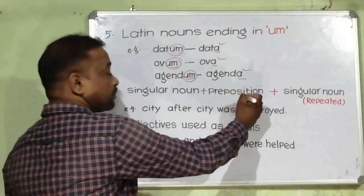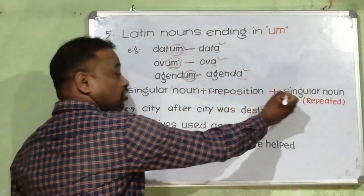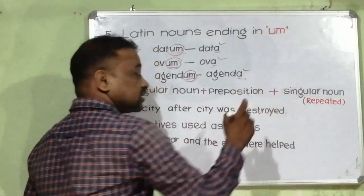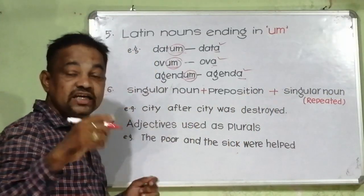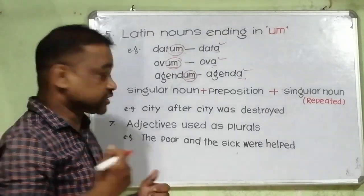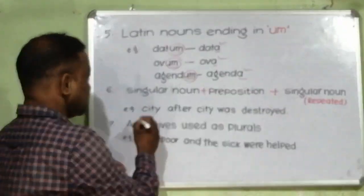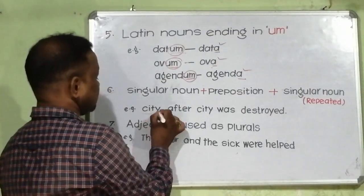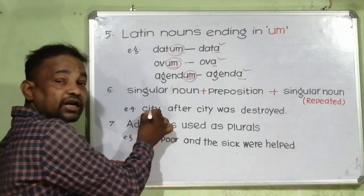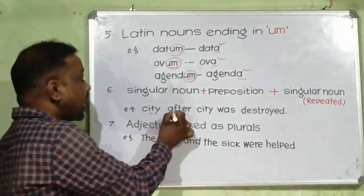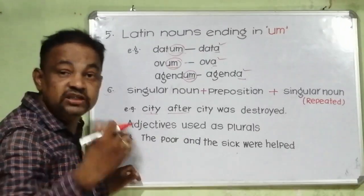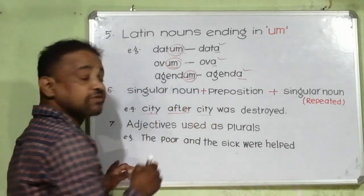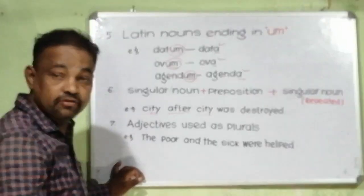Rule number six: singular noun plus preposition plus singular noun, when the same noun is repeated or used. For example, city after city — here 'city' is a singular noun, 'after' is a preposition, and 'city' again is a singular noun.